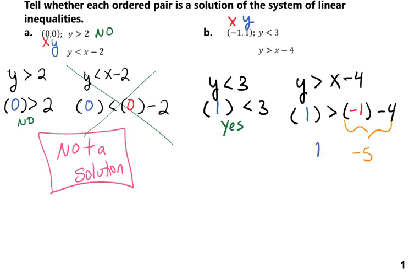So it's asking, is 1 greater than negative 5? And that answer is yes. And so because we have a yes for both, we have a yes for both, this tells us that it is a solution.